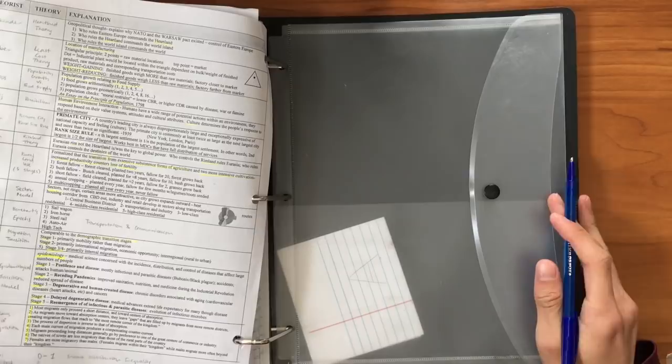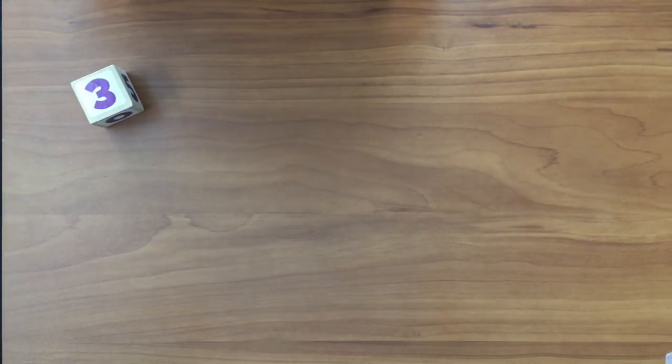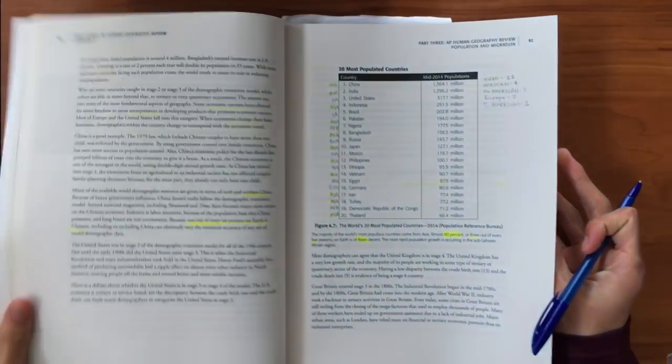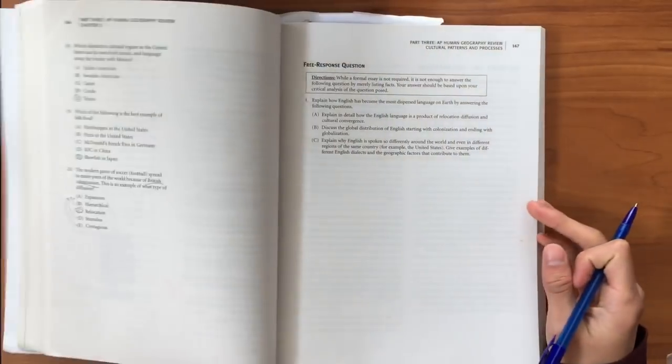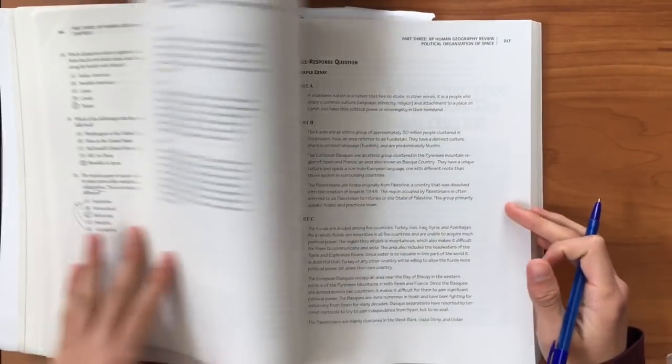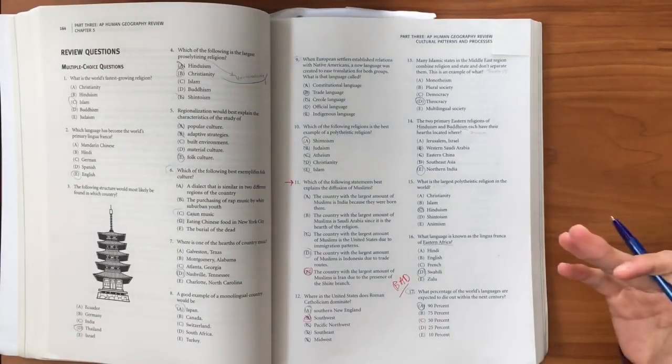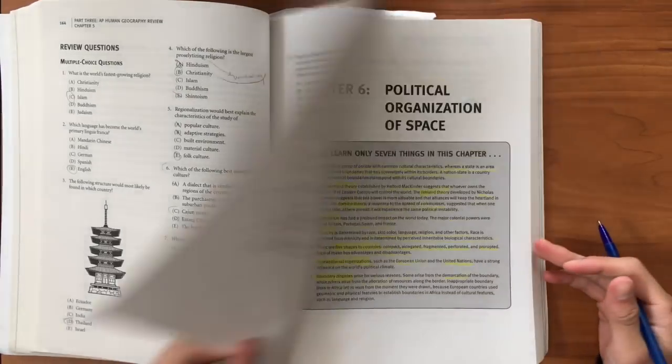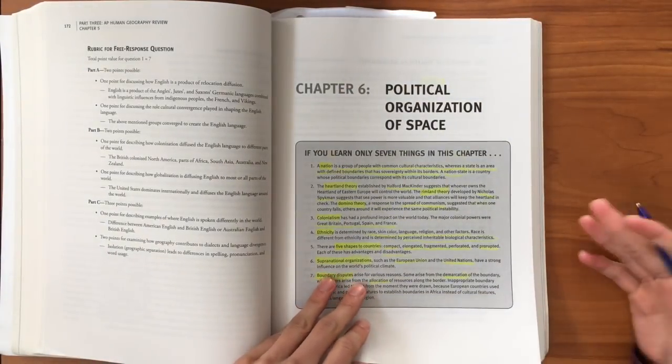My third tip is definitely to do more multiple choice. You can find multiple choice in your review book. There should be plenty of them in your review books, and the more you do, the more familiar you get with it, so you should be prepared for the multiple choice section.